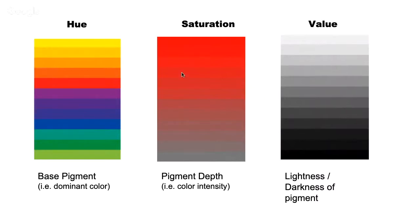For saturation, pigment depth is the correct word to describe it — basically how vivid or bold the color is. Value simply means the opacity or lightness of the color — whether it's light or dark. These are the three things to learn today for colors.